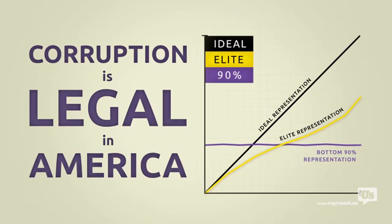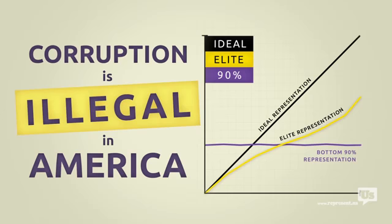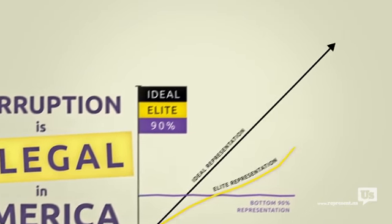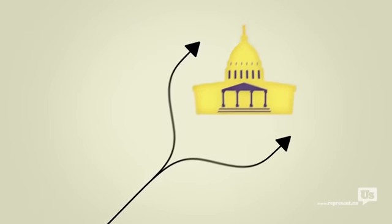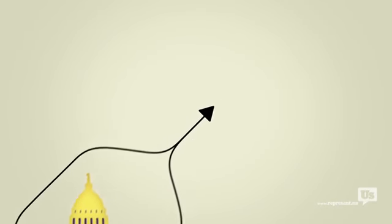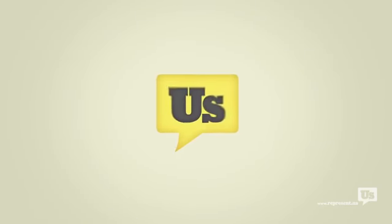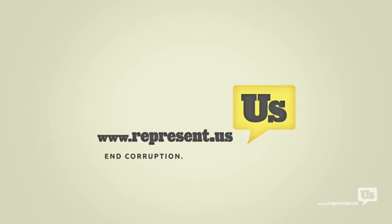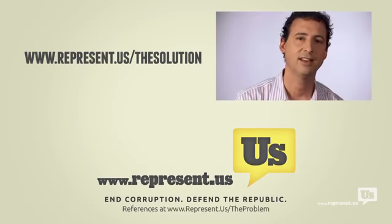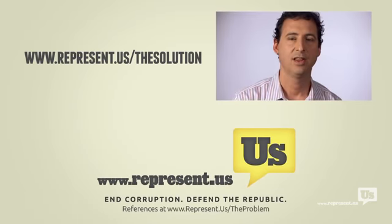The solution here isn't rocket science. Make corruption illegal. We already know Congress won't do it. I mean, one look at this chart will tell you that. What we need is a plan that lets us go around Congress and do what the American people do best. Fix this mess ourselves. Well, good news. We have that plan, and it's already working. Now that we've got the problem covered, let us show you how to be part of the solution.